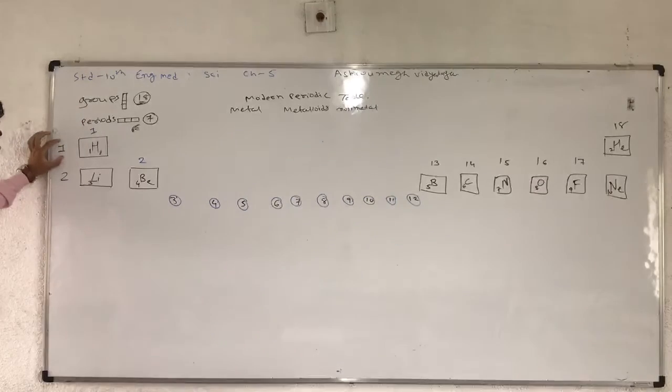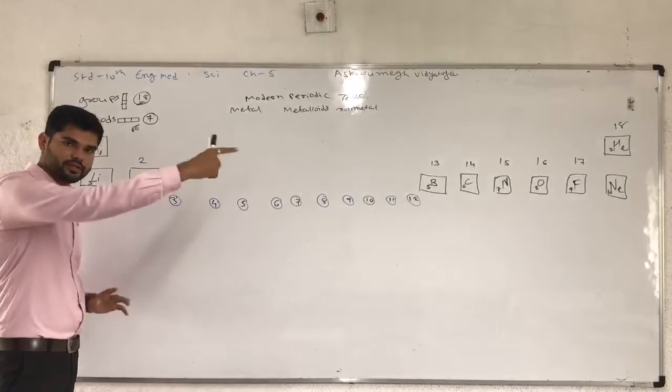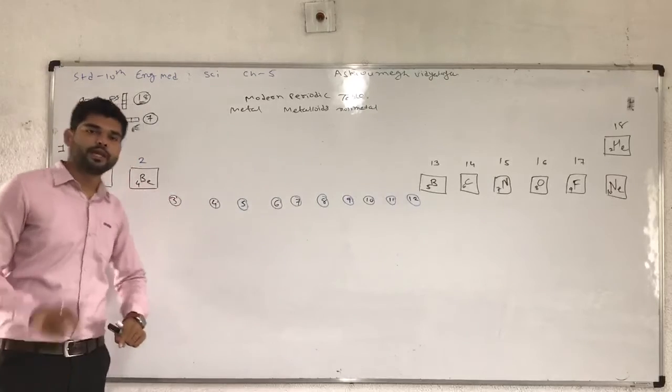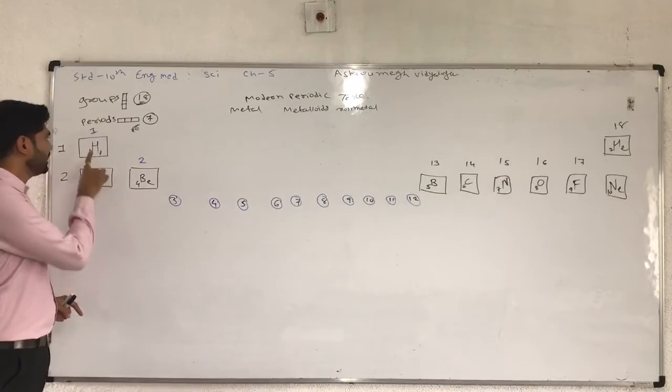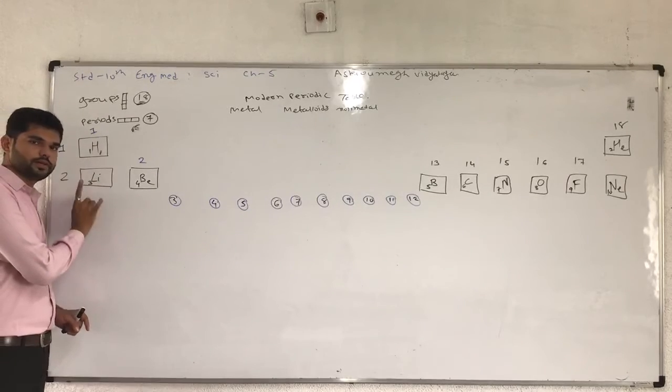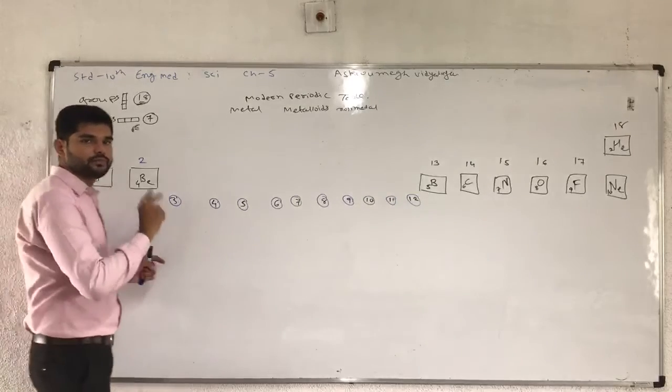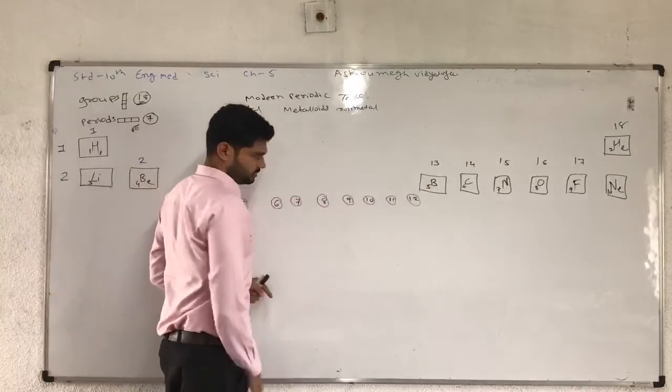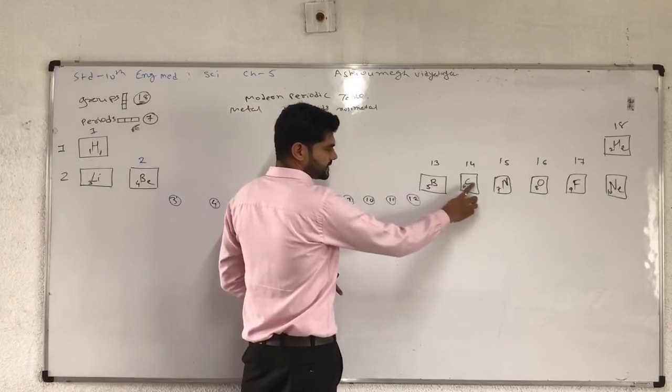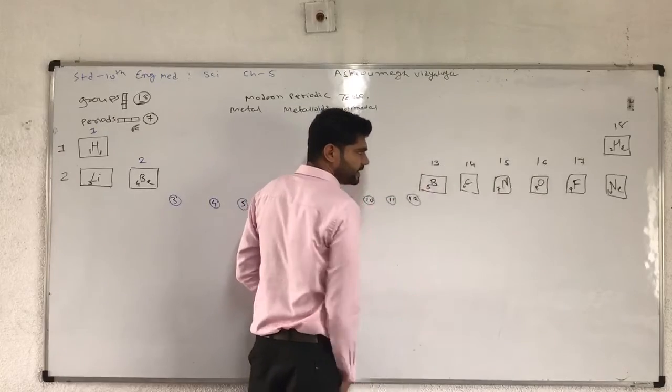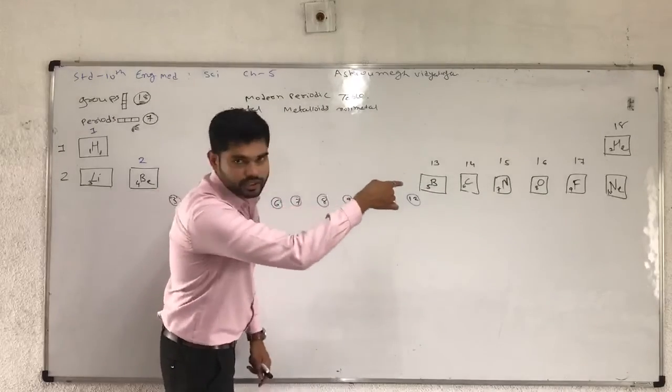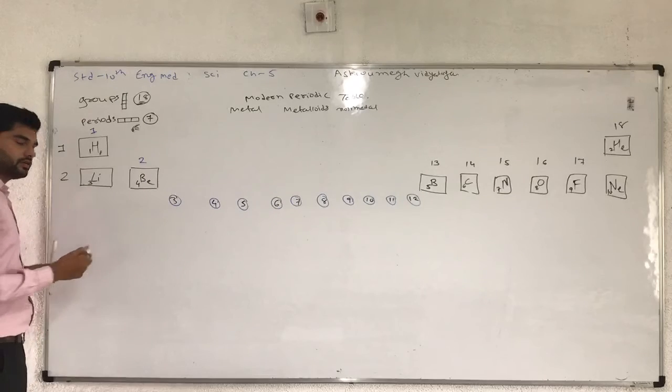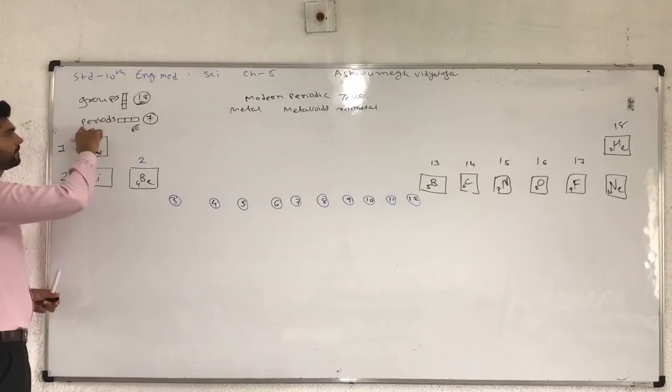Remember, groups are 18, periods are 7. First period has hydrogen and helium represented, first period with hydrogen in group 1 and helium in group 18. Second period has only 2 elements in first and second groups: lithium in first group and beryllium in second group. Now atomic number 11 in the third period.